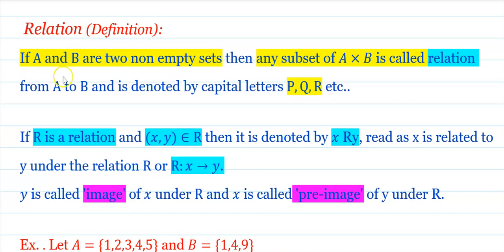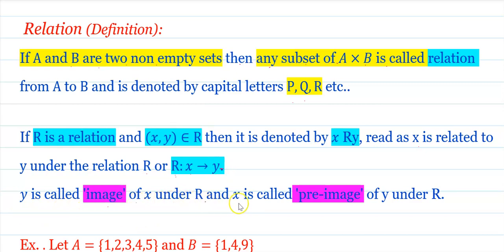Definition of Relation: If A and B are two non-empty sets, then any subset of A × B is called a relation from A to B, denoted by capital letters R, P, Q, etc. If R is the relation and (x, y) belongs to R, then it is denoted by x R y and read as 'x is related to y under relation R'. y is called the image of x under R, and x is called the pre-image of y under R.